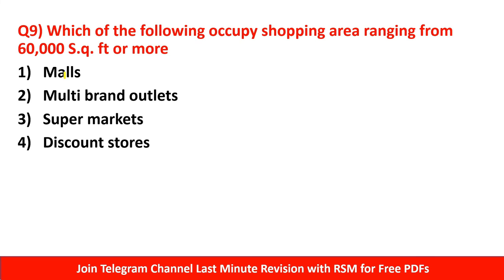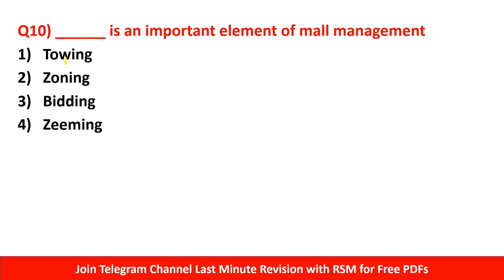Question 9: Which of the following occupies a shopping area ranging from 60,000 square feet or more — malls, multi-brand outlets, supermarkets, or discount stores? Remember, if a shopping space is 60,000 square feet or more, that is a mall. Malls are not small — they have multiple floors with many shops. Although during the pandemic malls were closed causing losses, once things are controlled malls will restart. So the right answer is malls.